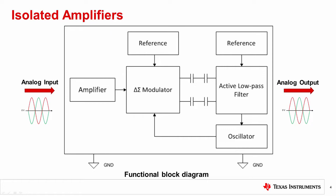The delta sigma modulator uses the internal reference voltage and clock generator to convert the analog input signal to a digital bit stream that is then transferred across the isolation barrier. The bit stream is processed by an analog filter on the low side of the isolation barrier and presented as a differential analog voltage at the output.